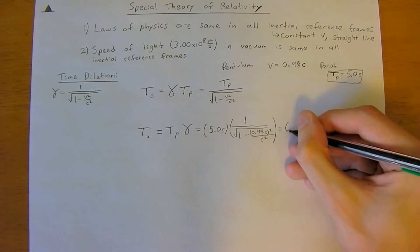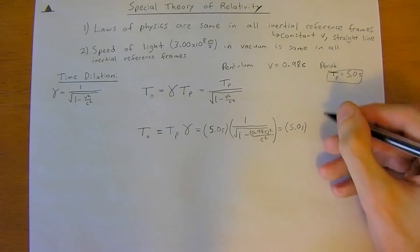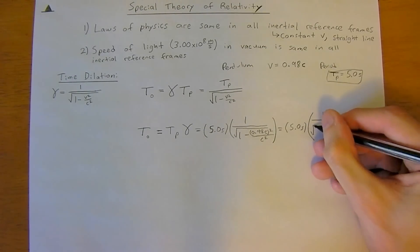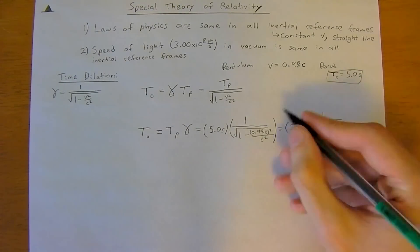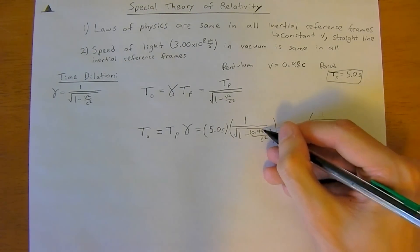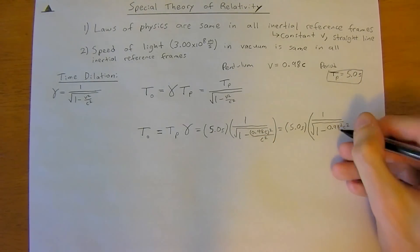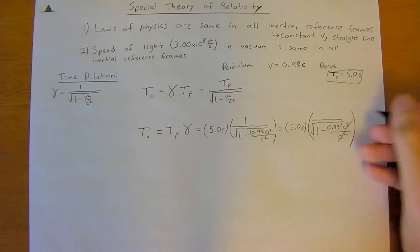So, we can write this another way as 5.0 seconds times 1 divided by the square root of 1 minus 0.98 squared times c squared. Because, remember, it just distributes out the square root of 0.98 and the square of c divided by c squared. So, now these will cancel.